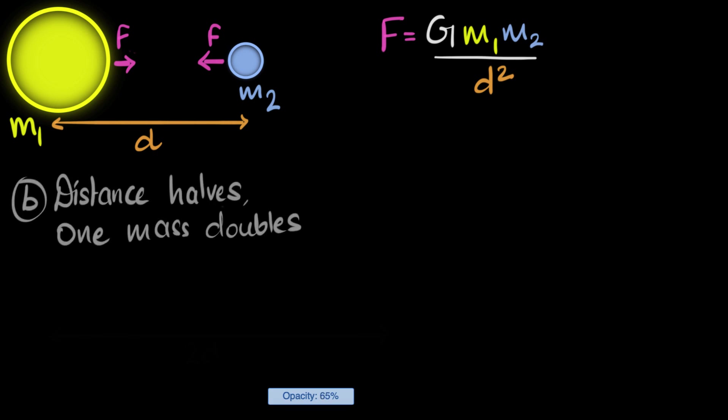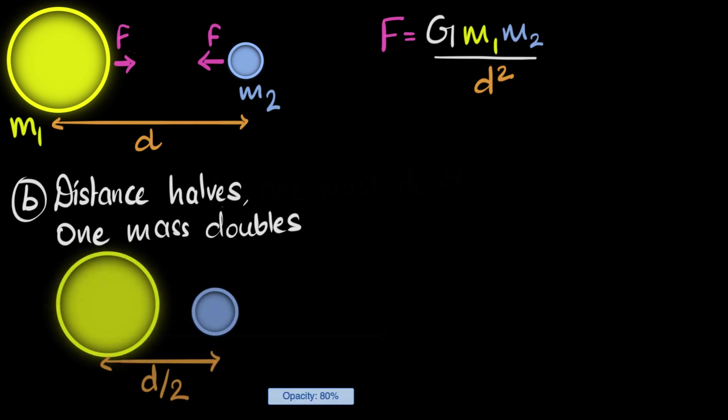Let's try one more. In this case, we have distance between them halves, and one of the masses doubles. Again, let's draw this. So the distance between them halves, that means they come closer to each other. And now the distance becomes d by two. And one of the masses doubles. They're not even which mass, so we can assume. So let's say the mass of the sun remains the same. Let's assume that the mass of the earth doubles. So now the mass of the earth becomes 2m2.